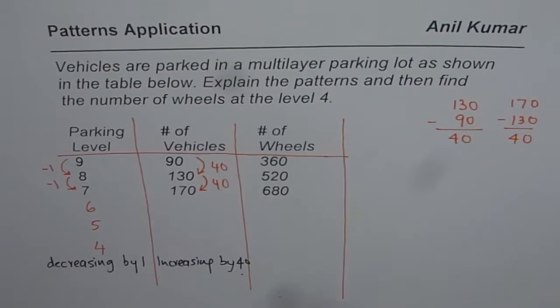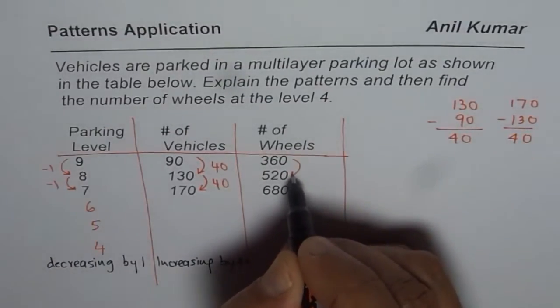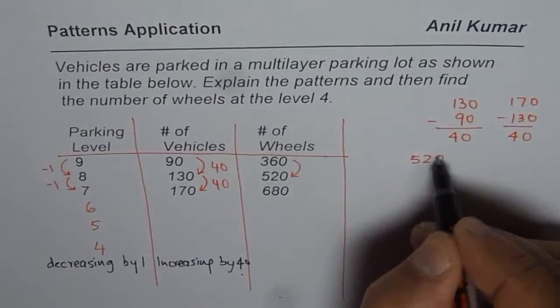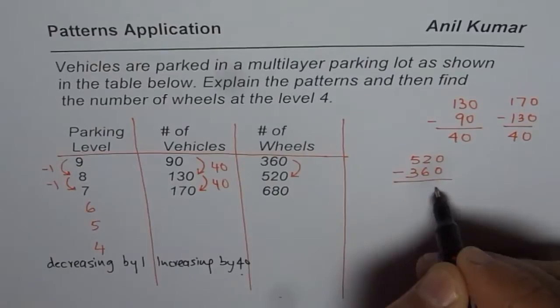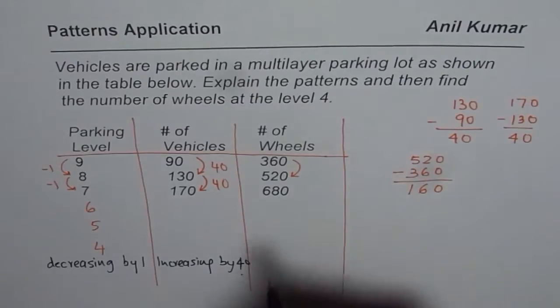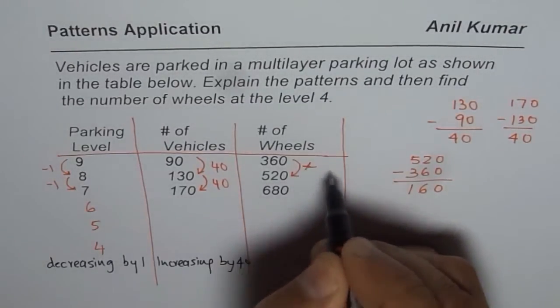Now what is happening in the last case, which is the number of wheels? Let us check. When you go up, the number of wheels are increasing by how much? Let us figure it out. 520 take away 360. So it is 12 take away 6 is 6, and 4 take away 3 is 1, so 160. You should do plus 160.